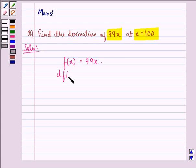Now we have to find df(x) by dx. That will be equal to 99, because 99 is a constant, so it comes down as it is.